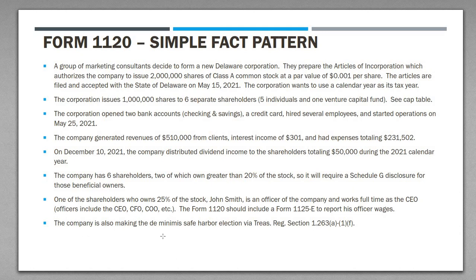Lastly, the company will make a de minimis safe harbor election via Treasury Reg 1.263(a)-1(f). In short, this means that if you're buying property used in your trade or business with a useful life over a year but at small dollar values, you can just expense it immediately instead of capitalizing and depreciating it. We're going to make that election to write off the equipment-related property we purchased in the first year.